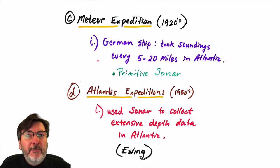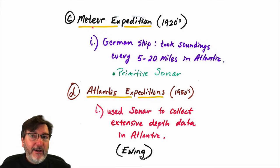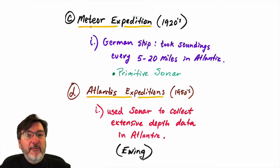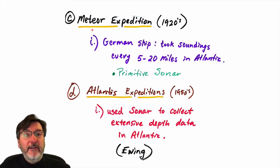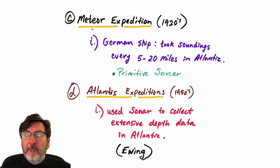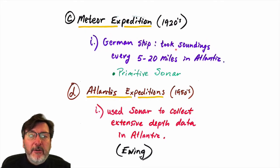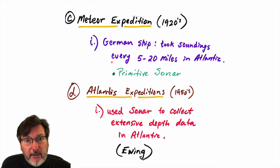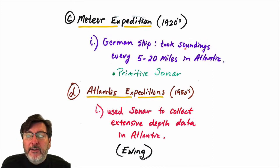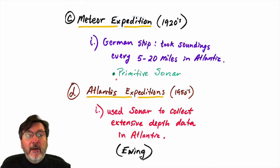In the 1920s, the German Meteor expedition — which we spoke about earlier, an important expedition in terms of scientific discovery but also with some secret geopolitical military aspects — put their best chemist on the ship to try to extract gold from seawater. That was Fritz Haber, who later became very good at making nitrogen compounds. They developed a much better sonar system and took many more depth measurements, using sound to make soundings every five to twenty miles across the Atlantic.